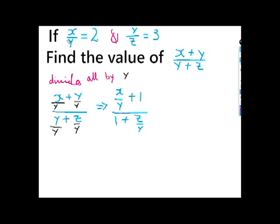x over y is 2, so this becomes 2 plus 1 over 1 plus z over y. y over z equals 3, so z over y equals 1 over 3. This equals 2 plus 1, which is 3, divided by 1 plus 1/3.